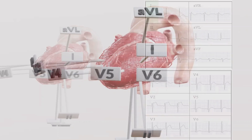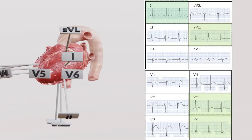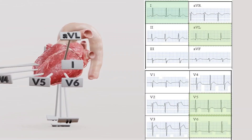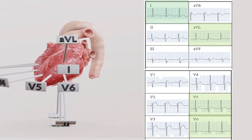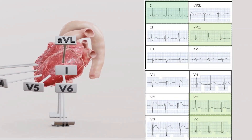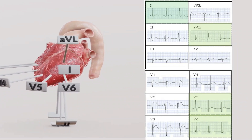To really get a good assessment of the lateral wall, you need to check out Lead 1, AVL, V5, and V6. If you see changes across these, think about the lateral wall.